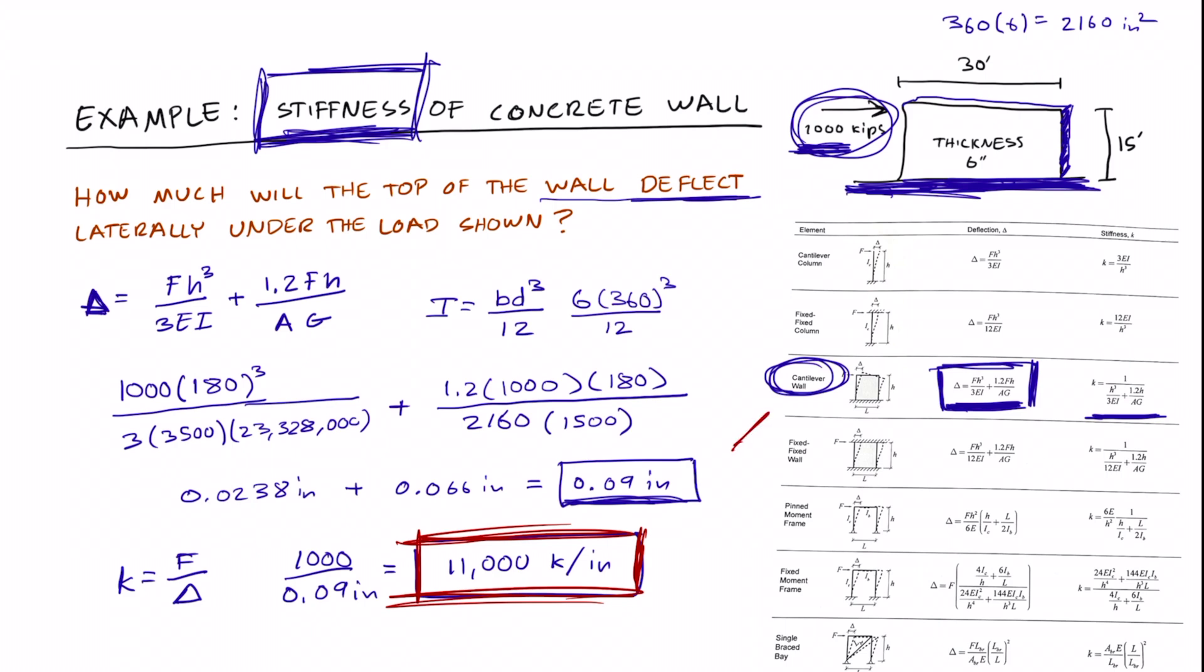We just use the cantilever wall formula. You'll need this table here. And we can do all different types: cantilever column, fixed column, fixed wall. This table here is very important, especially for the California seismic exam. So that's how you find the stiffness, the deflection of a cantilever concrete wall.